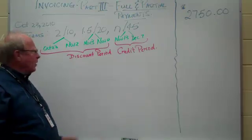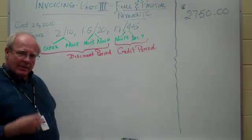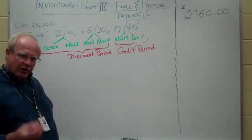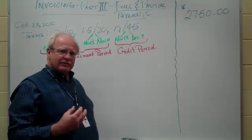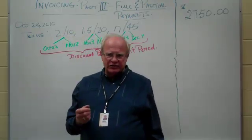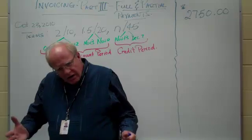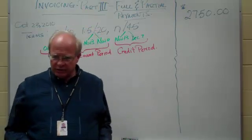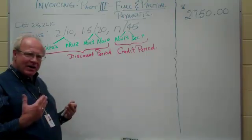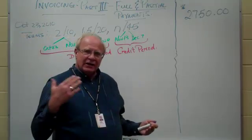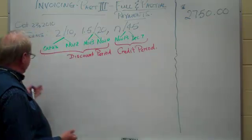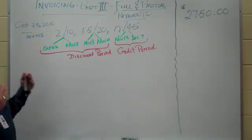This is part three and the final part on invoicing. I'm assuming you've seen part one and part two in that order. In part two we looked at what happens if you want to pay the invoice in full — paying in the two different discount periods and outside of the discount period, which is the credit period. Now we will be looking at what happens if we make partial payments during this time, using exactly the same example as before.